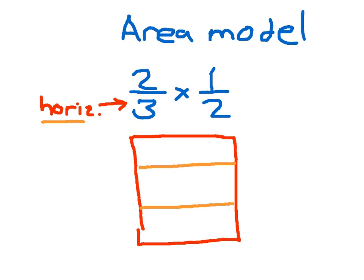Next, I'm going to look at the other fraction, 1 half. I look at the denominator for 1 half — the denominator tells me to divide things into 2 parts. In the area model, this will be vertical lines dividing into 2 parts.